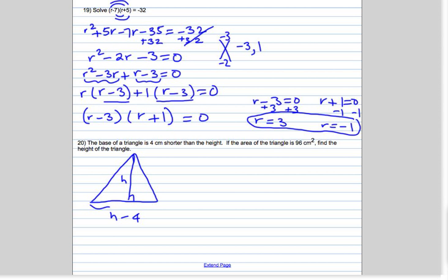Area of a triangle is 1 half base times height. The area of this particular triangle is 96 square centimeters.